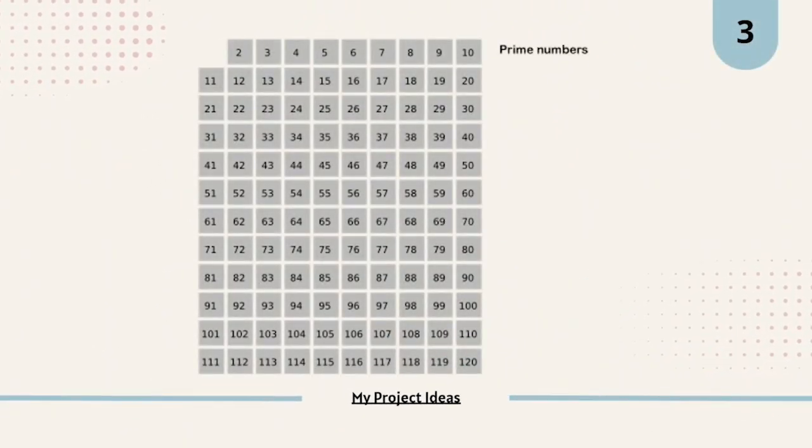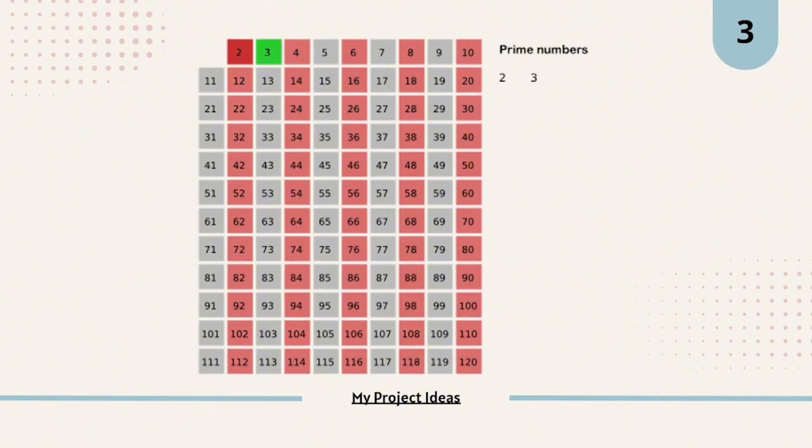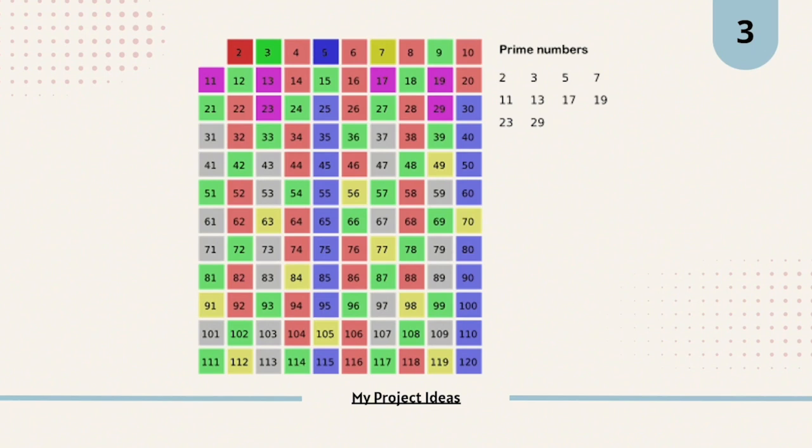So it's not very difficult guys. If you did not understand it, just have a look at this illustration. You can see first it's marking 2 then 2 times 2. All the multiples of 2 are marked first. Then we are moving towards number 3. Then all the multiples of 3 are marked. Then we are moving towards number 5. All the multiples of 5 are marked. Then 7. All the multiples of 7 are marked.